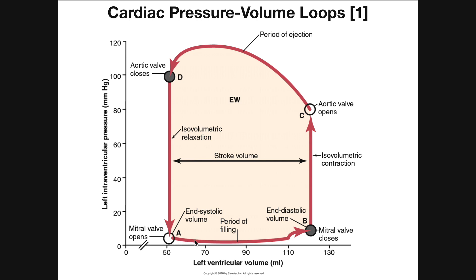As we go along this filling curve, there's really no change in left ventricular pressure, but the volume is increasing. When the mitral valve opens at approximately 50 milliliters, blood moves from the left atrium into the left ventricle, and volume increases to approximately 120 milliliters. The question is: why does filling stop? It stops because the mitral valve closes.